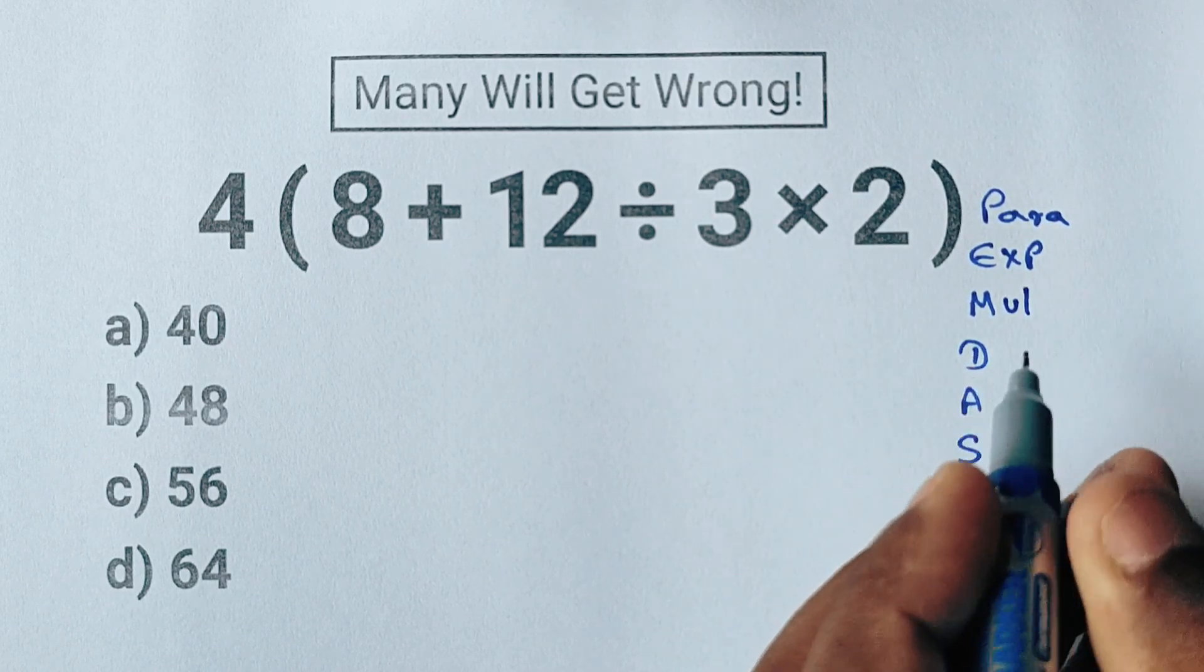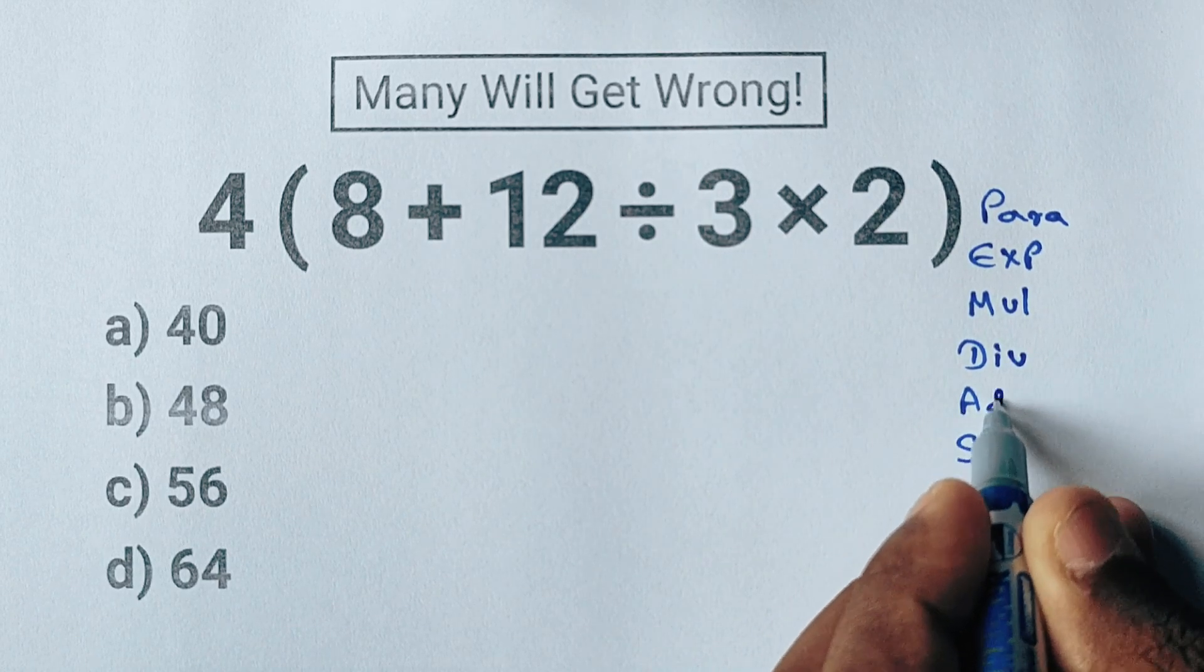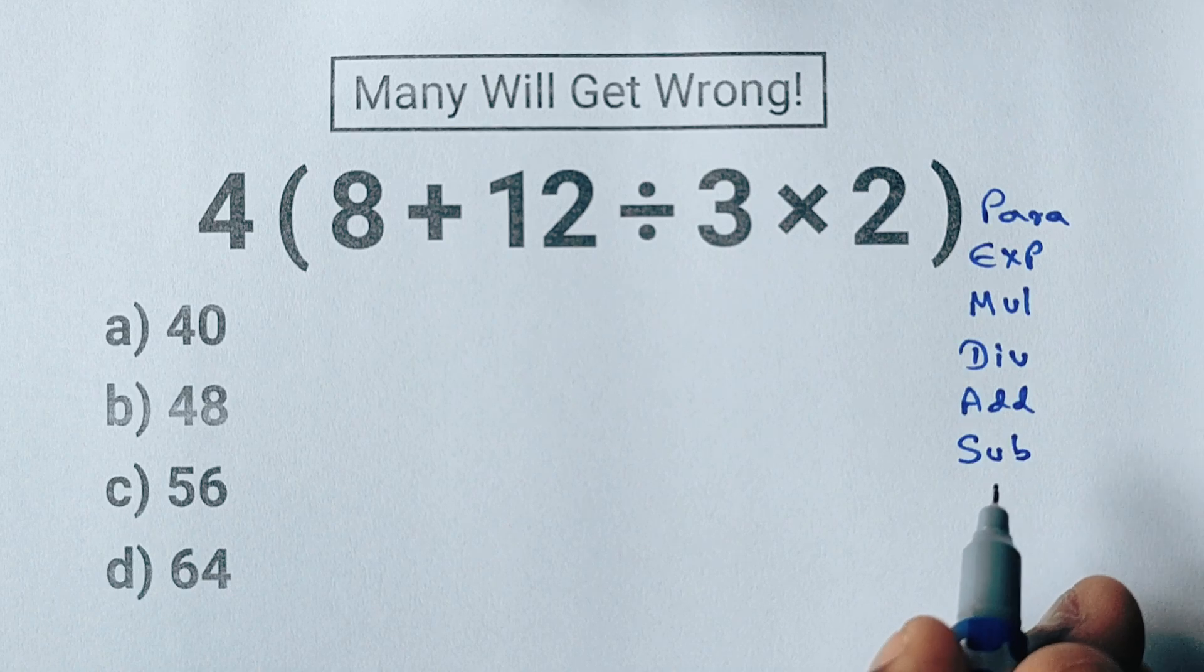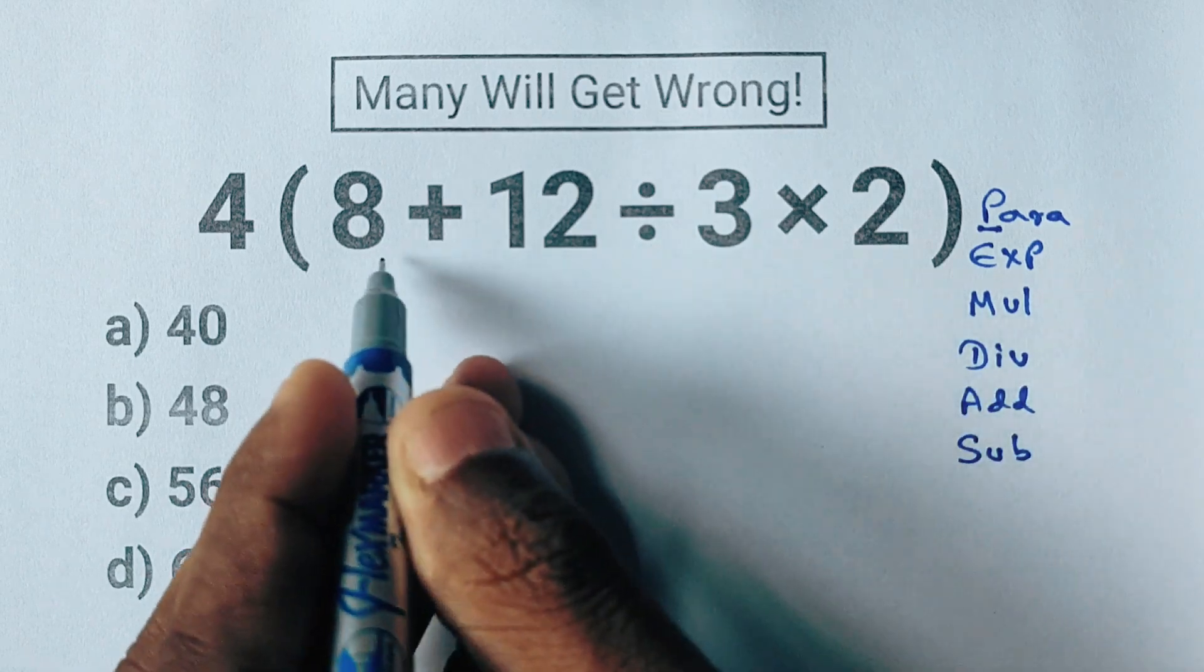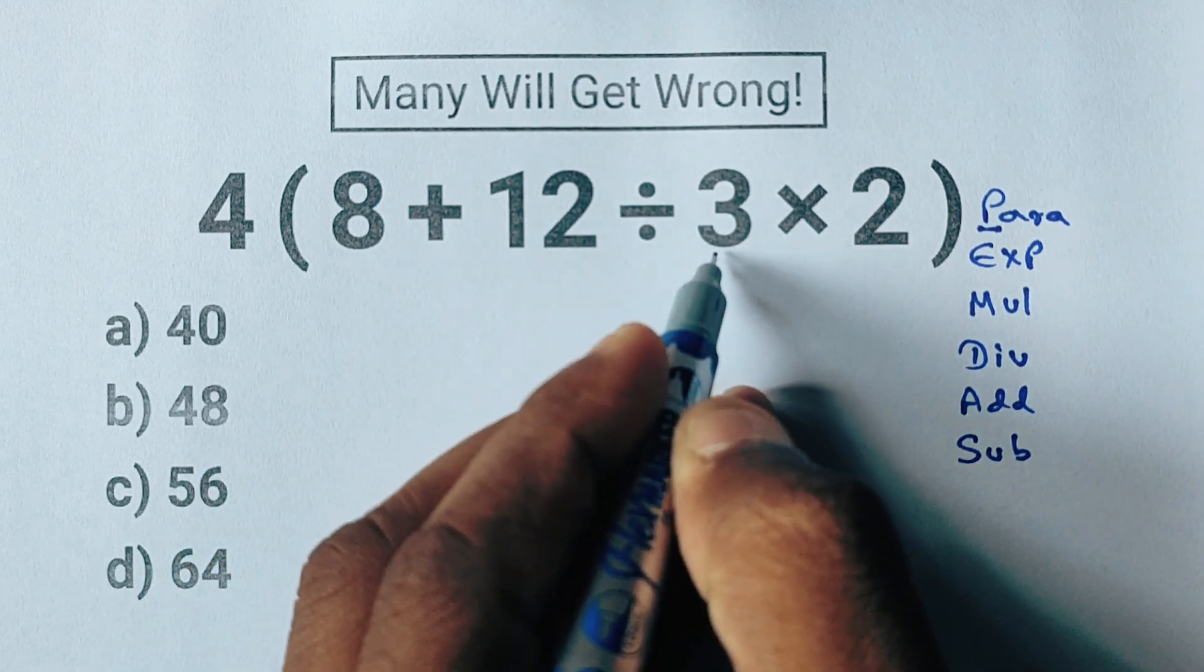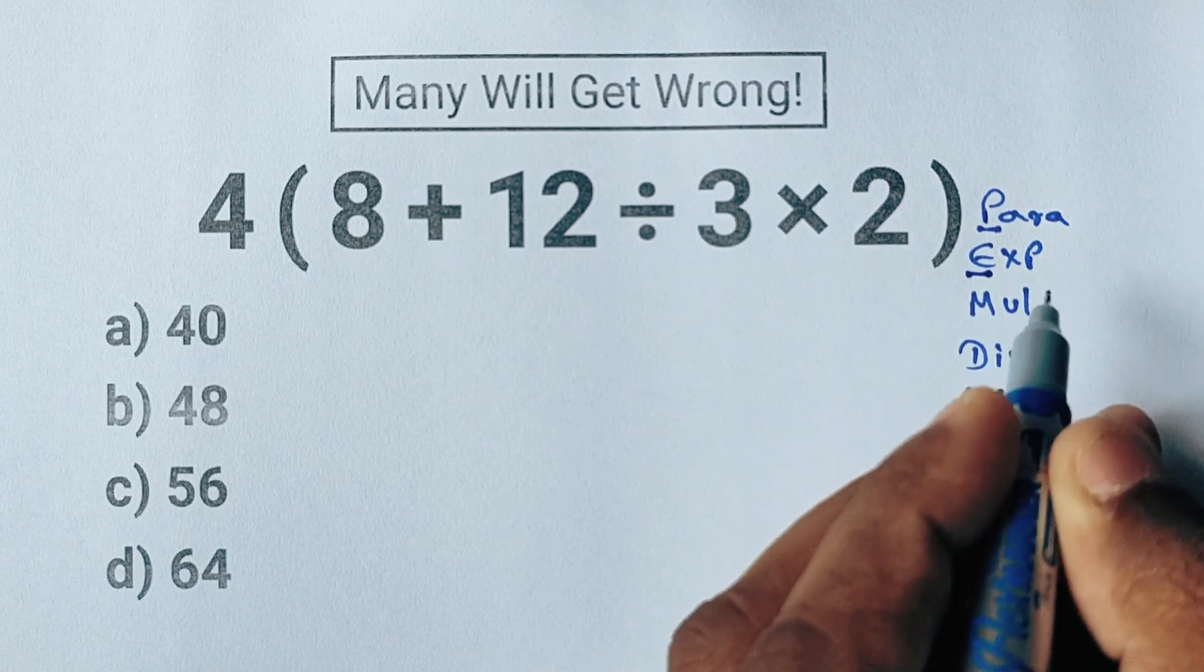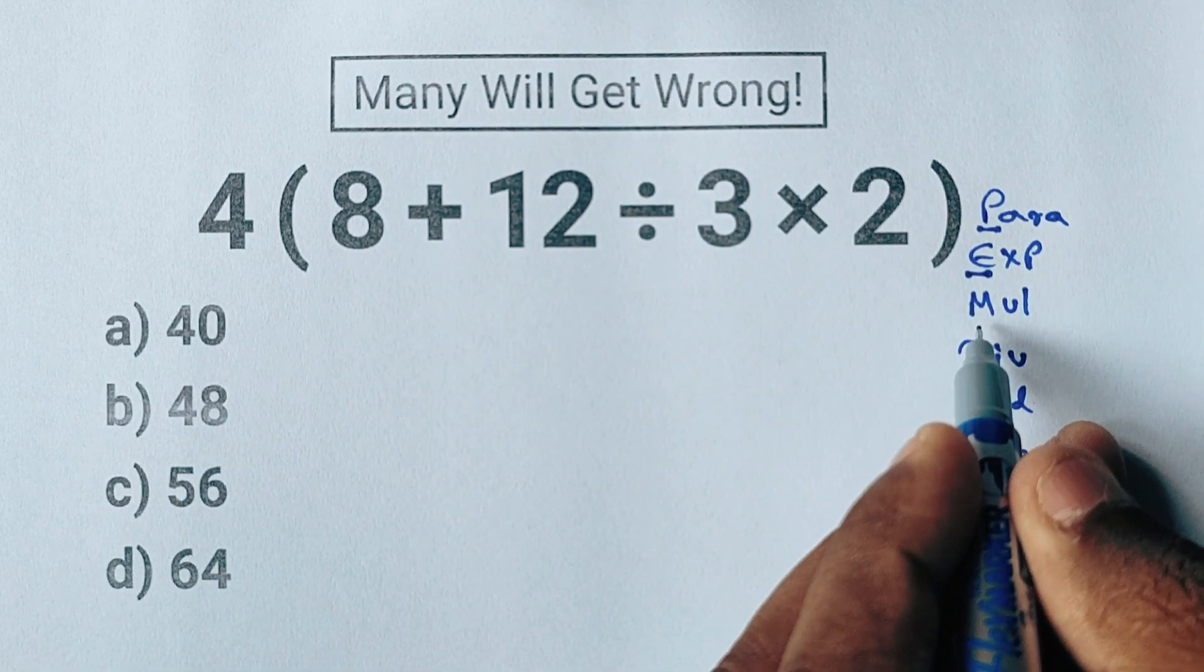We start with parentheses, so we focus on the expression inside: 8 + 12 ÷ 3 × 2. After that we'd normally check for exponents, but since there aren't any here, we can skip that step.